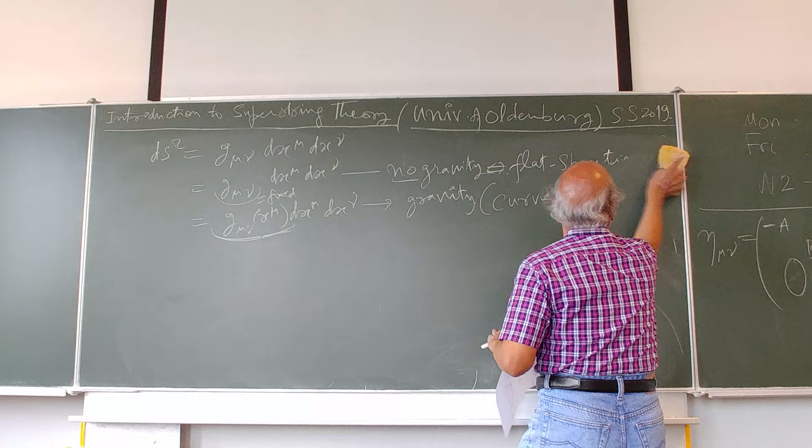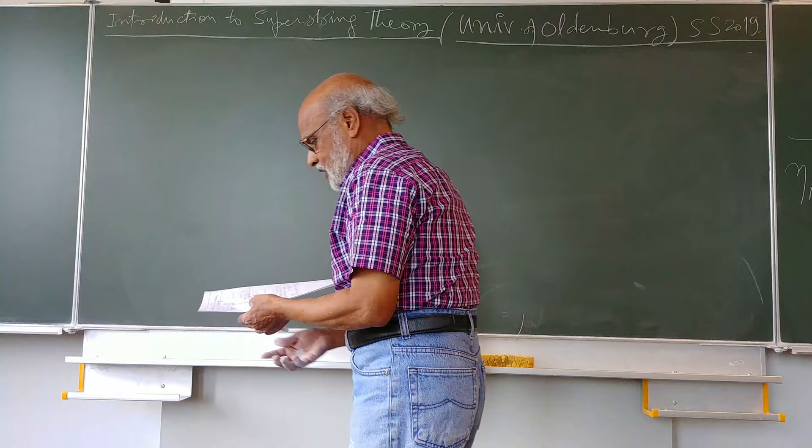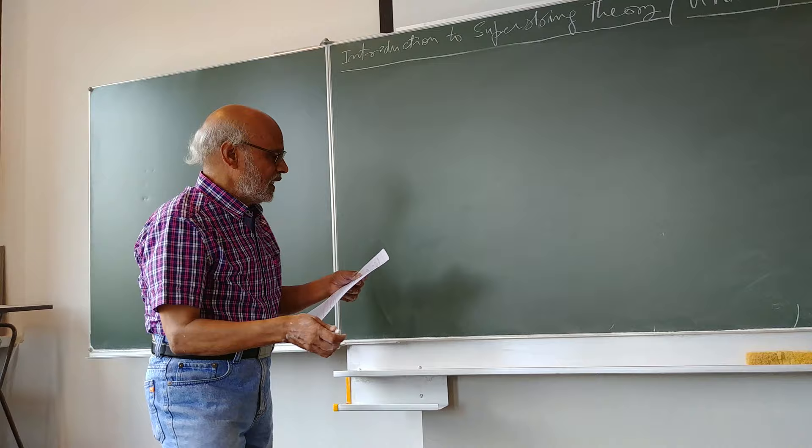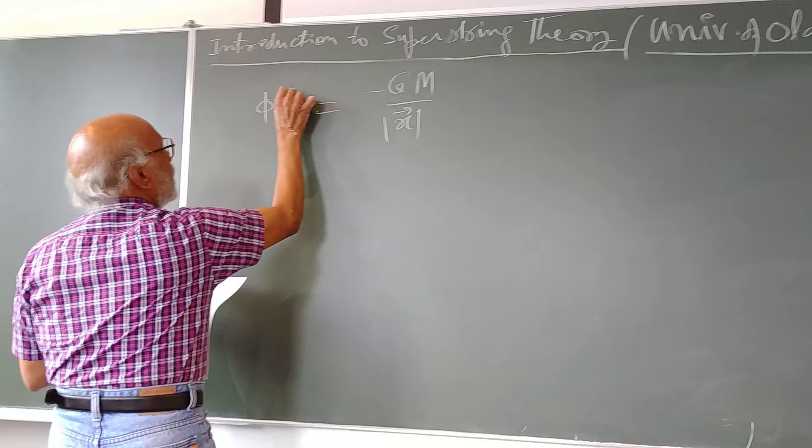So now one more point which is to my mind very crucial, and this has to do with the potential energy phi of x. This is minus GM by x. This is very well known.